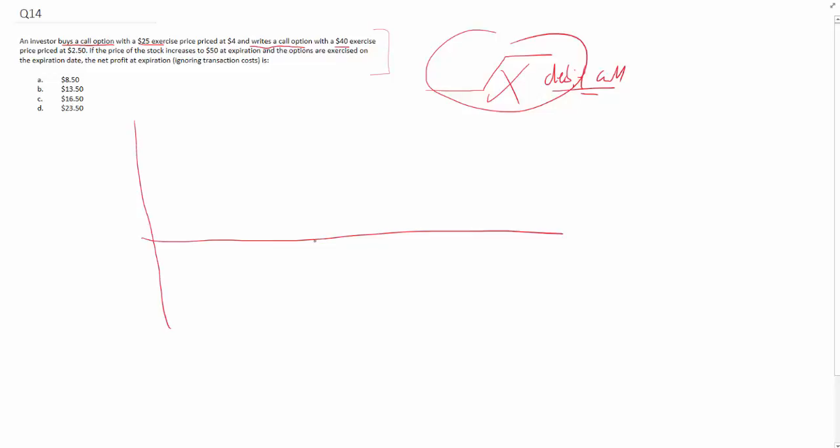So what you have here is that you have longed the call - let's call this the strike price of the long call, $25. Remember it's a debit call spread. Now, the call that you wrote has a strike price - the strike price of the short call is $40.